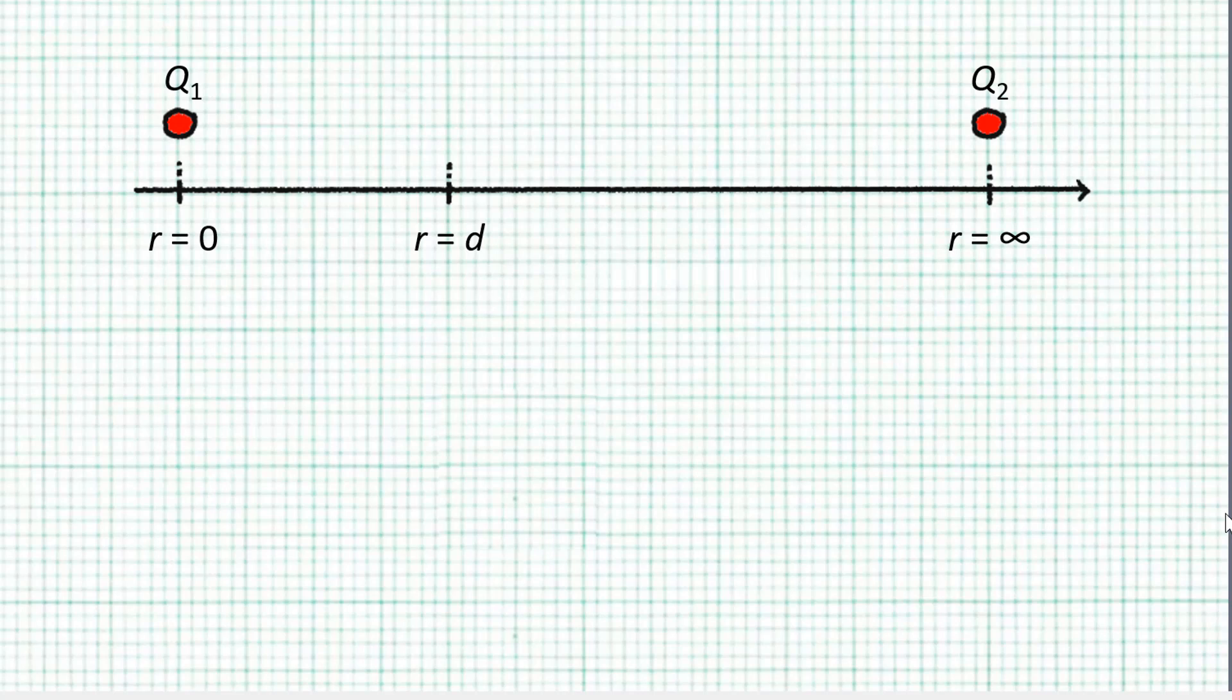So we have two positive charges Q1 and Q2. Q1 is fixed at r equals 0, and Q2 is initially at r equals infinity.